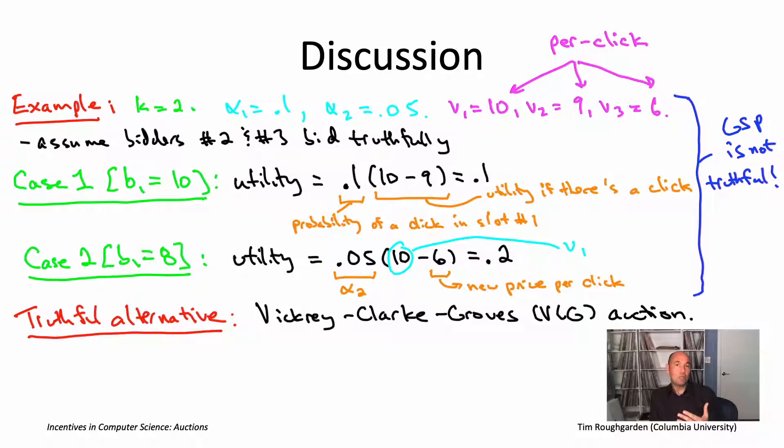Accordingly, in the VCG mechanism, it's charging smaller prices to the bidders to take away this incentive to drop down to a lower slot. And because it has to protect simultaneously across all possible lower slots that a bidder could try to underbid into, that's why the payments wind up being a weighted average of all of the lower bids, where the coefficients in that weighted average depend on the click-through rates. So that's the VCG auction, basically the same as GSP, except instead of just charging 100% of the next lowest bid, you might charge, say, 40% of the next lowest bid, 20% of the bid after that, 10% of the bid after that, and 30% of the bid after that. That would be an example price in the VCG auction.